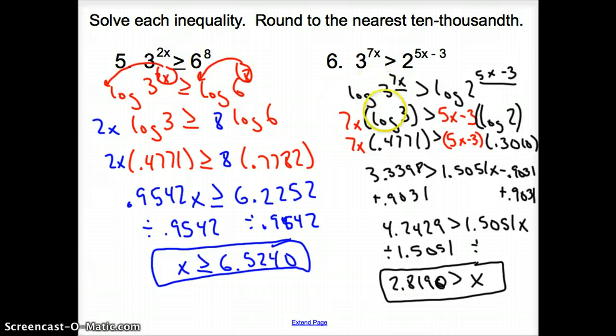2.8190 is greater than x for our final answer. Yes, I know it looks bad. There's a lot of icky numbers there. But just treat them like normal numbers. Decimals are numbers too. Just add them, subtract them, and divide them like you normally would solve the inequality and you'll be fine.